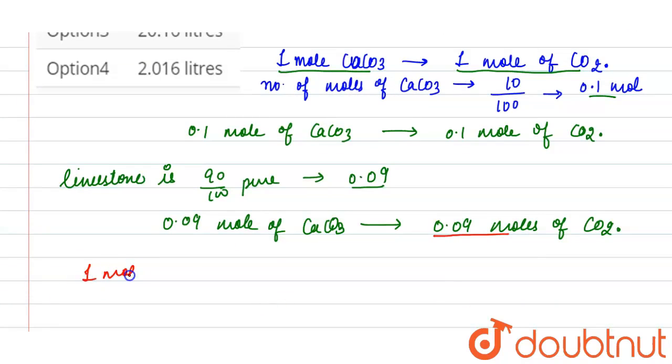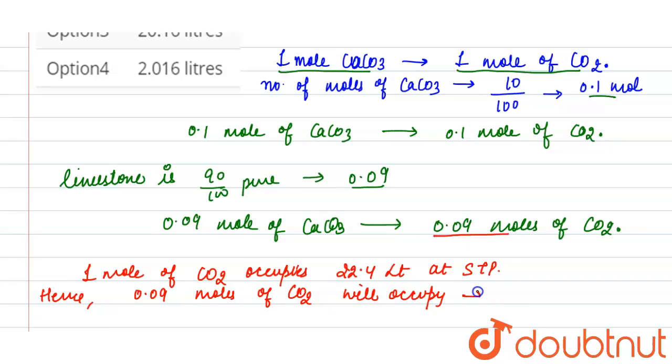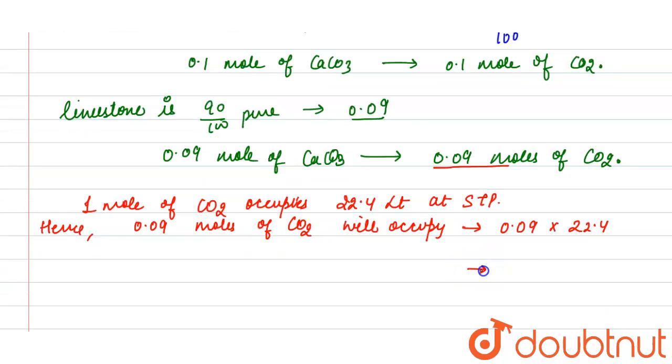As we know that one mole of carbon dioxide occupies 22.4 liters at STP, hence 0.09 mole of carbon dioxide will occupy - it will be 0.09 multiplied by 22.4, so it will come out to be 2.016 liters.